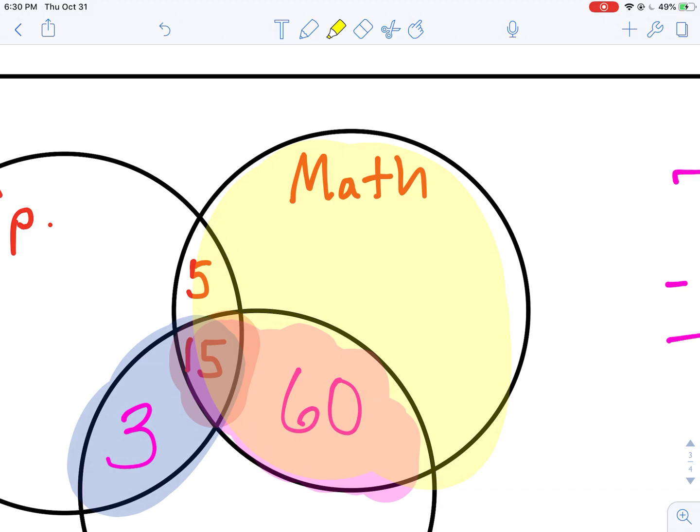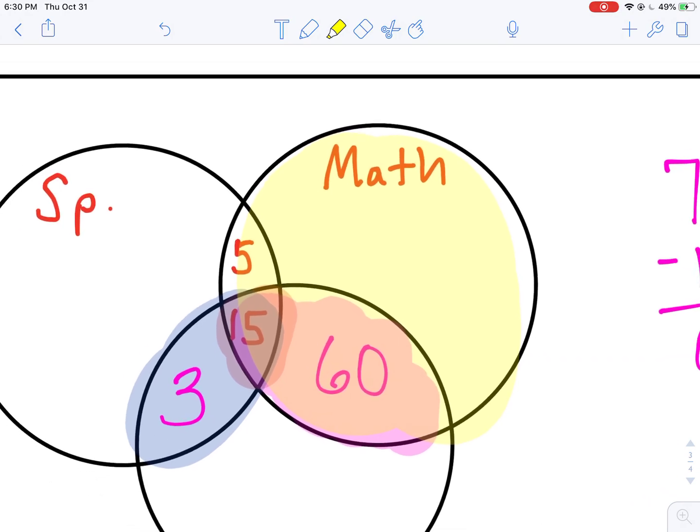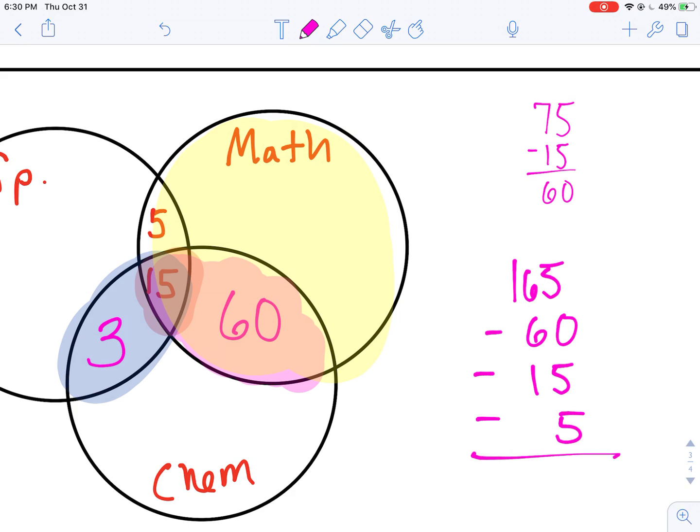So I'm going to take those away from the 165. I'm just going to tuck this away here. 165 minus 60 minus 15 minus 5. Let's do my math quick.